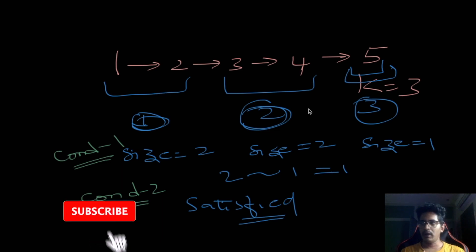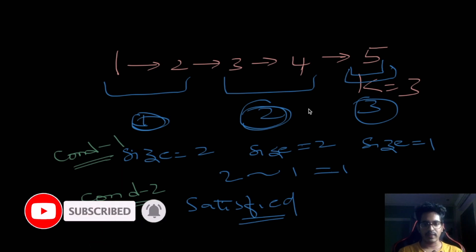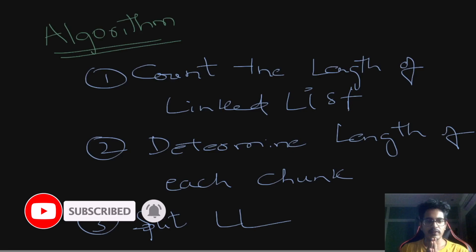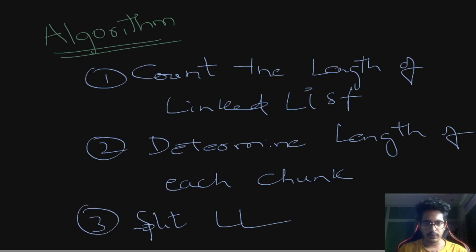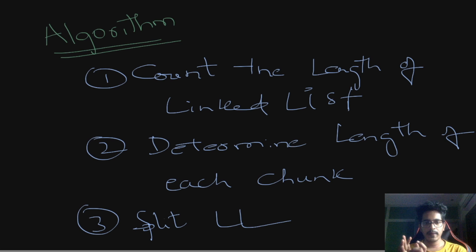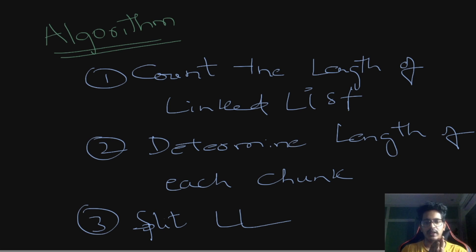Now let's work out the algorithm on how to solve this problem, then we will write the code. We will divide the solution into three parts. First, we will count the length of the entire linked list. Second, we will determine the length of each chunk — whether we split it into 4,4,3 or 2,2,1. Third, we will split the linked list and return the split parts as a list.